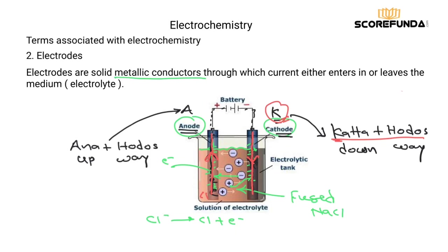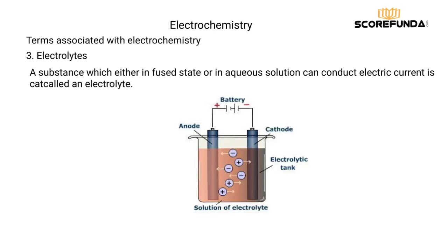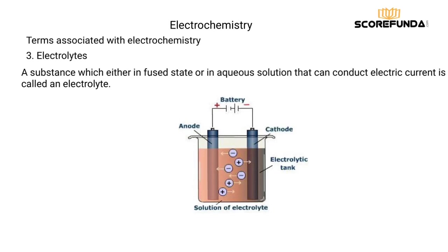Now the third term: electrolytes. An electrolyte is defined as a substance which, either in the fused/molten state or in aqueous solution, can conduct electric current. The solution inside the electrolytic cell is called an electrolyte. When substances like NaCl (which is hygroscopic) absorb moisture or are in molten state, ions become free to move, allowing them to conduct current — that is termed an electrolyte.